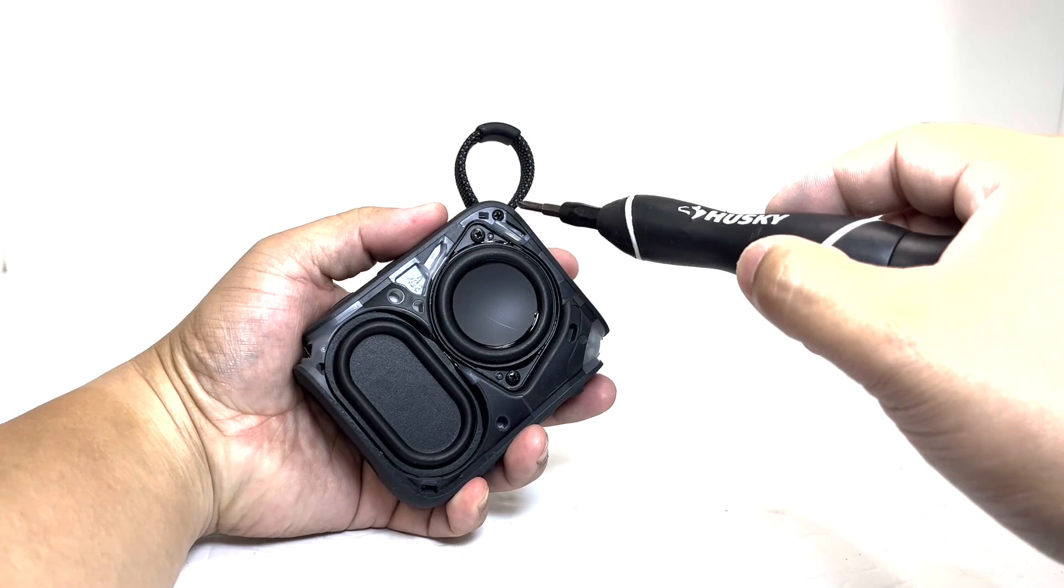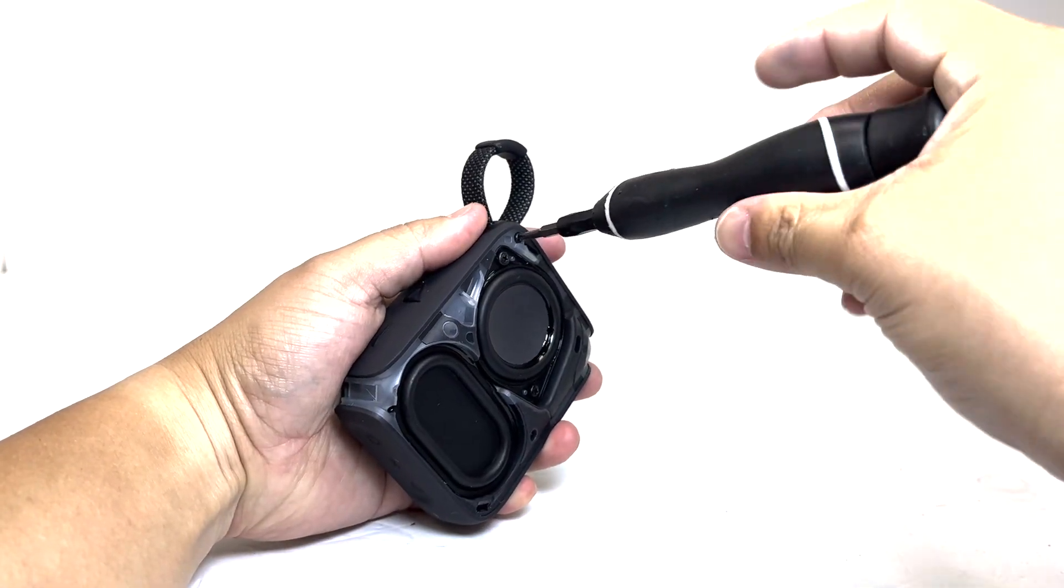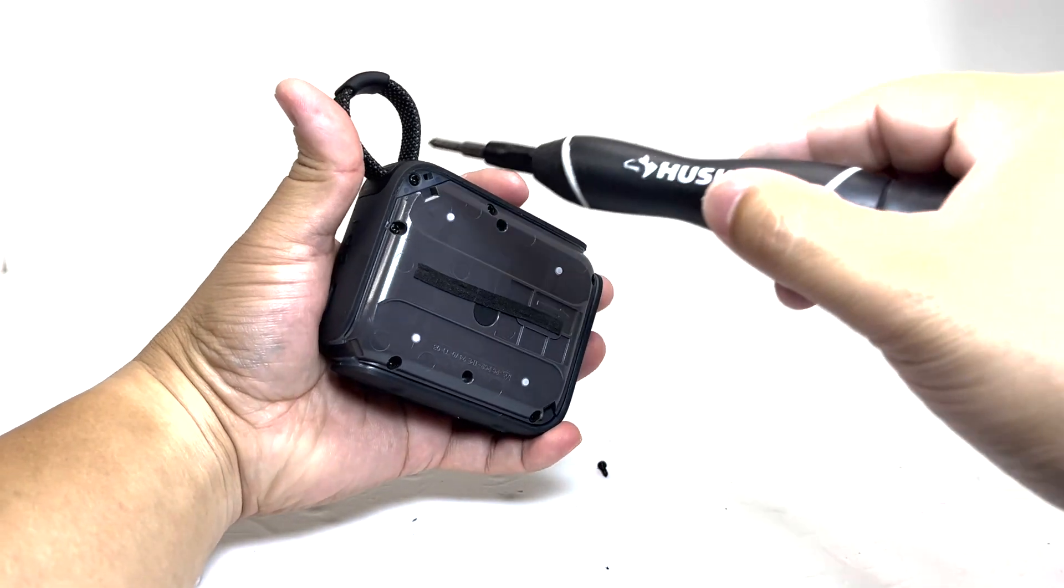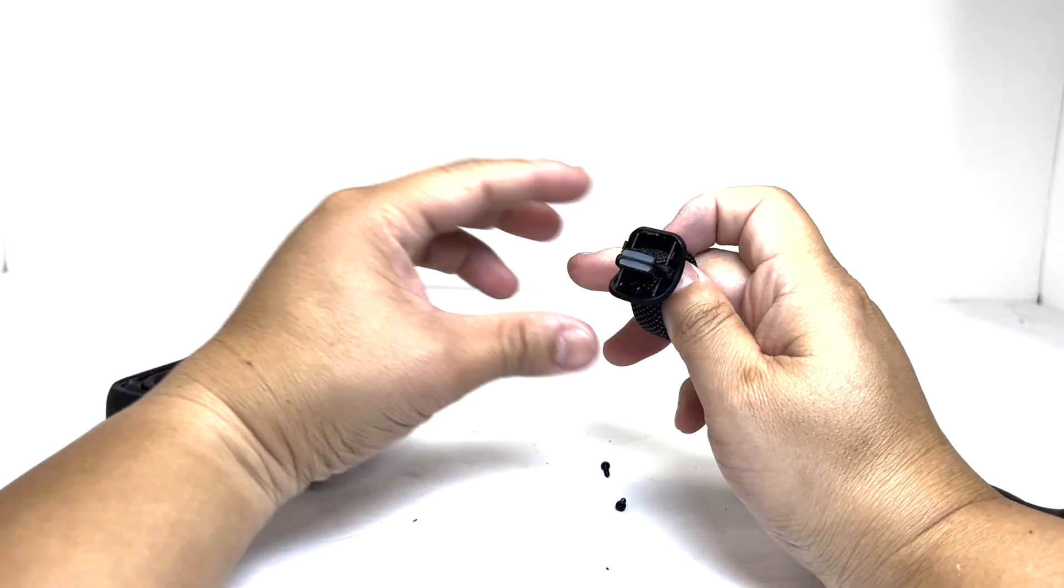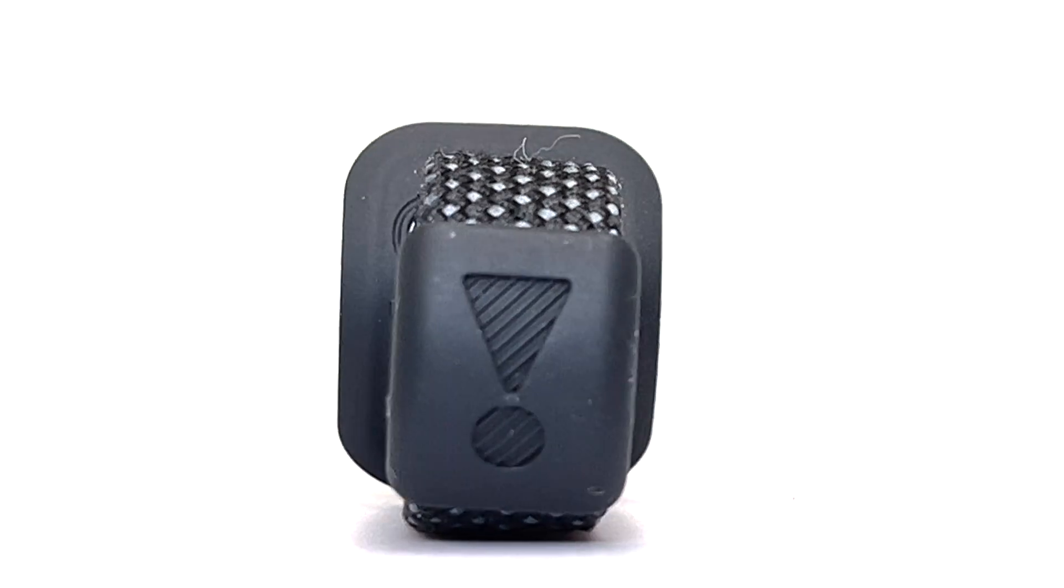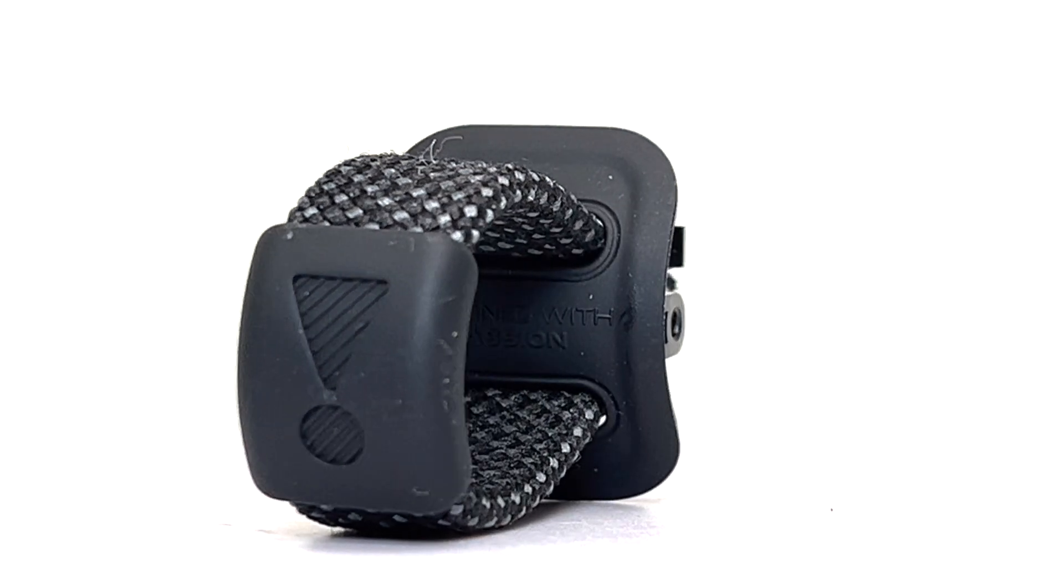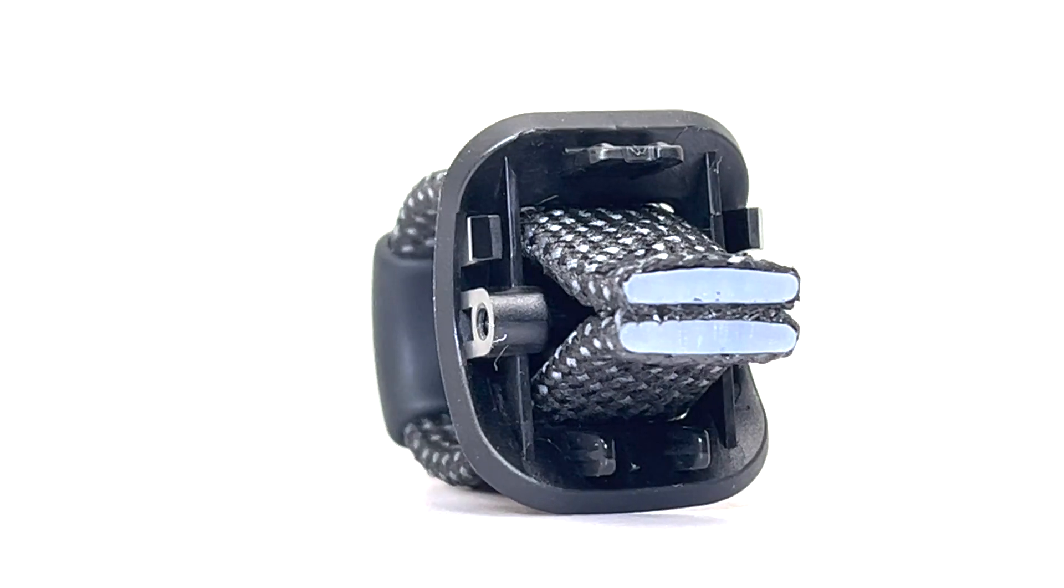Now we will remove the two screws to detach the integrated loop. This loop is made of sturdy rubber and reinforced with fabric covering, providing both durability and a comfortable grip.